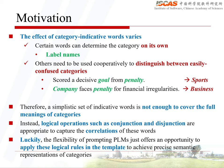Therefore, a simplistic set of indicative words is not enough to cover the full meaning of categories. Instead, logical operations such as conjunction and disjunction are appropriate to capture the correlations of these words. Luckily, the flexibility of prompting PLMs offers an opportunity to apply these logical rules in the template to achieve precise semantic representation of categories.